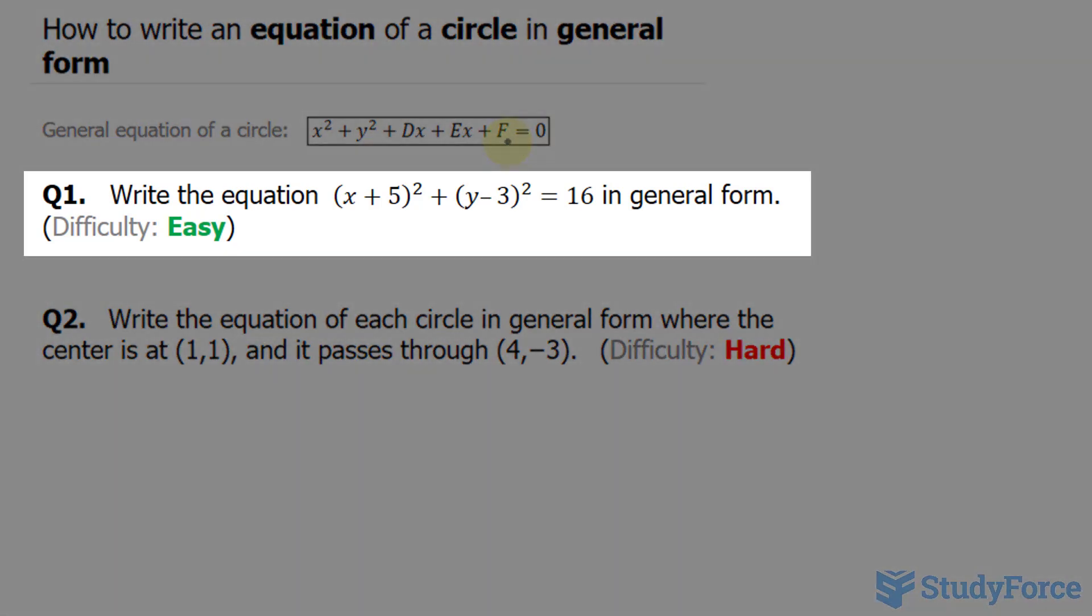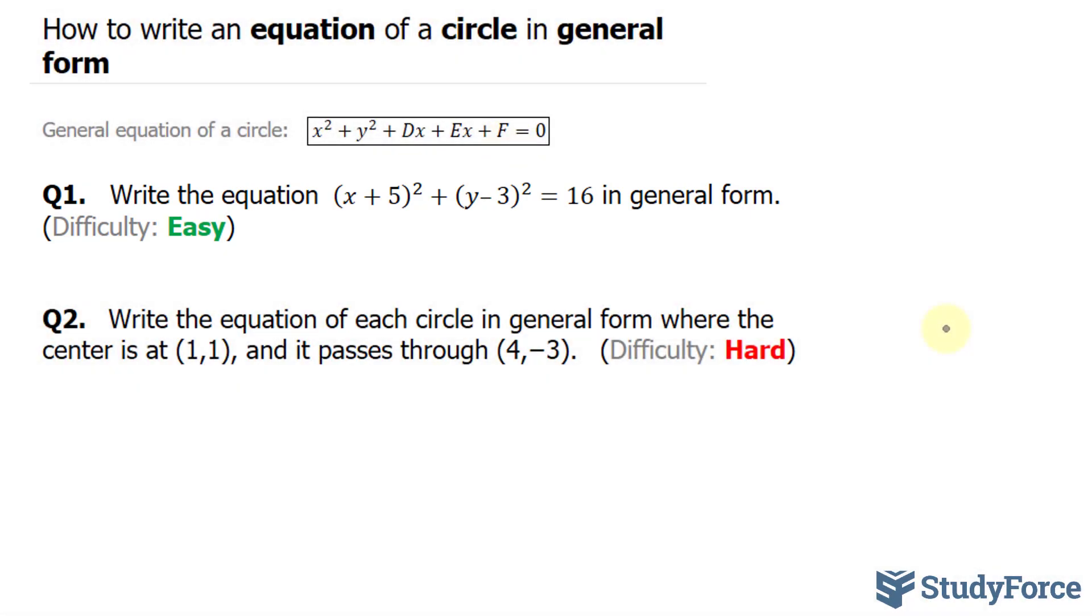Question one reads: write the equation (x + 5)² + (y - 3)² = 16 in general form. Currently, this equation is in standard form. To convert it from standard form to general form, all you have to do is expand it.